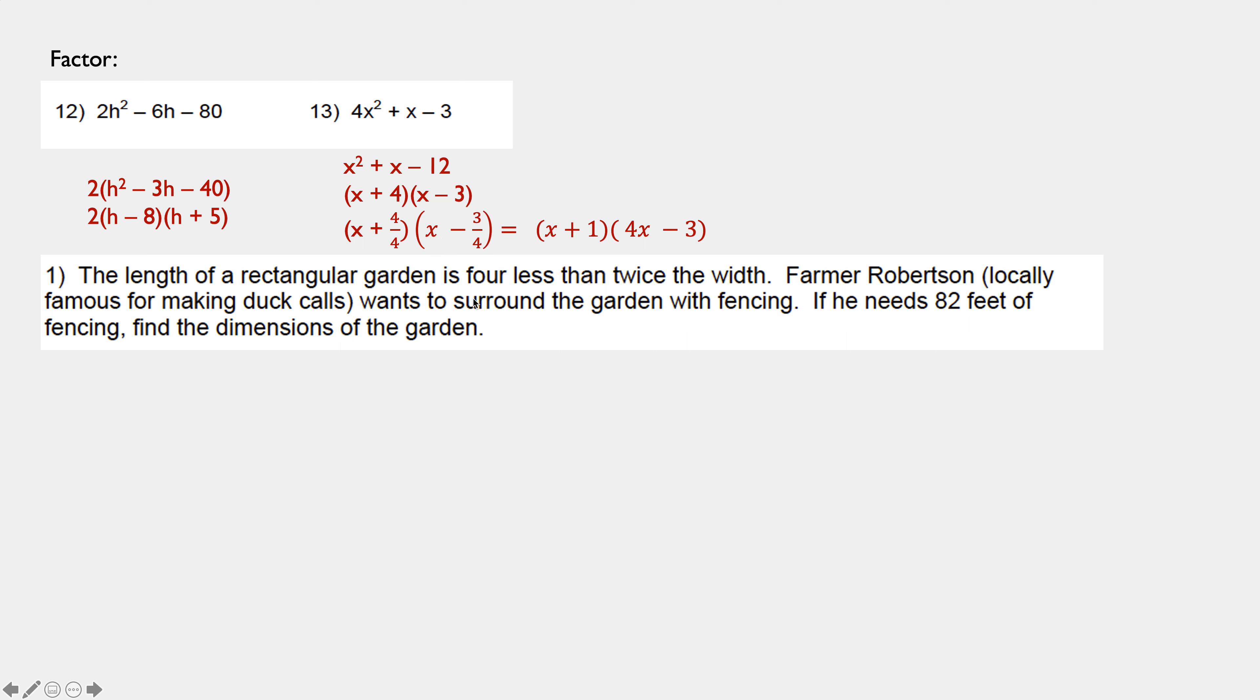If you didn't do the duck call problem or the rectangular garden problem in number 1, then do so now. Anytime we have a problem that involves geometry, we always like to draw the figure. It's a rectangular garden and we know that the length is 4 less than twice the width. So, W is my width and less than, last shall be first, first shall be last. Length is 2W minus 4.